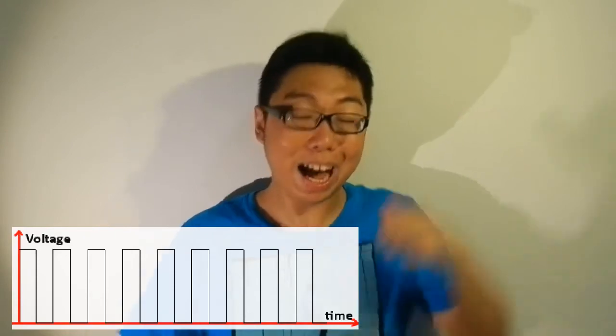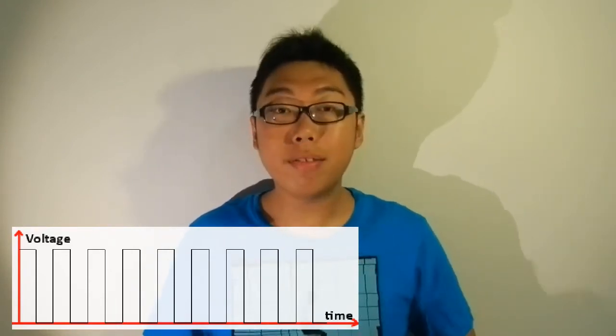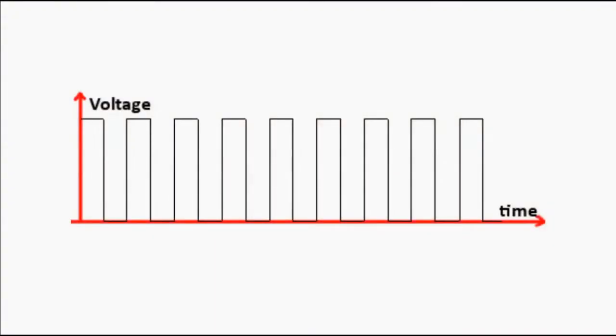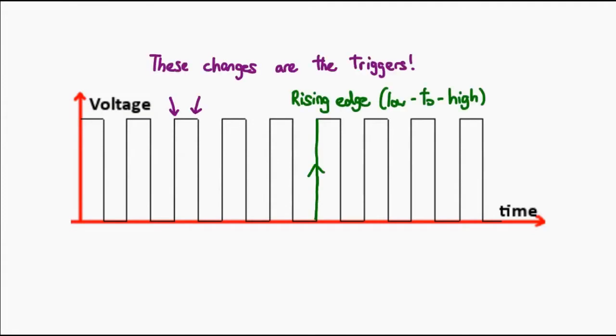One more thing about clocks: when a component is reliant on a clock signal, most of the time the thing that triggers the component to move on to the next state is essentially the rising edge or the falling edge of the clock signal. Normally the clock signal looks like a square wave that goes high and low over time. Since this is a square wave, it jumps from high to low in a very short amount of time. Logic components reliant on a clock signal are looking for these changes — this is called a rising edge, because it goes from low to high, and this is called the falling edge, because it goes from high to low.